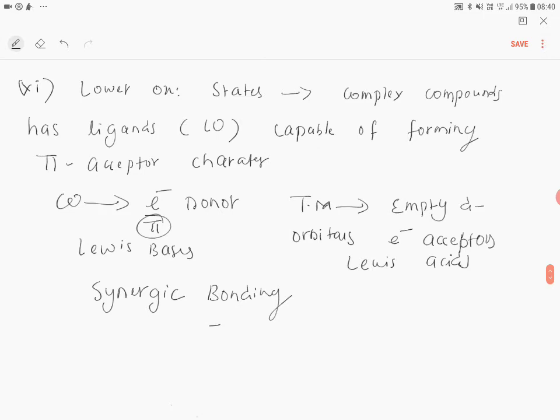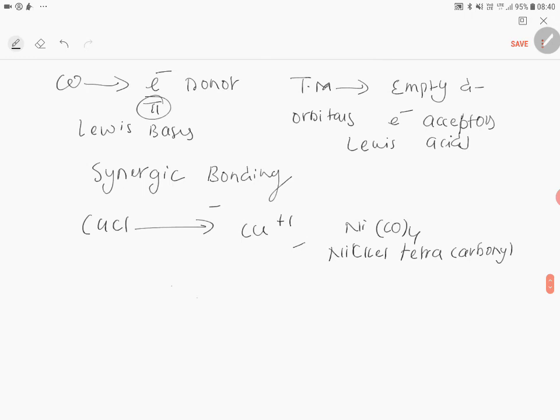For example, in CuCl, oxidation state of copper is plus one, whereas in nickel tetracarbonyl, oxidation state of nickel is zero.